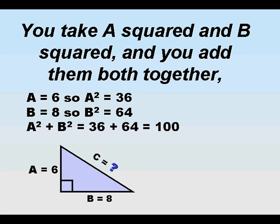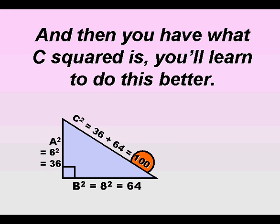You take A squared and B squared, and you add them both together. And then you have what C squared is. You'll learn to do this better.